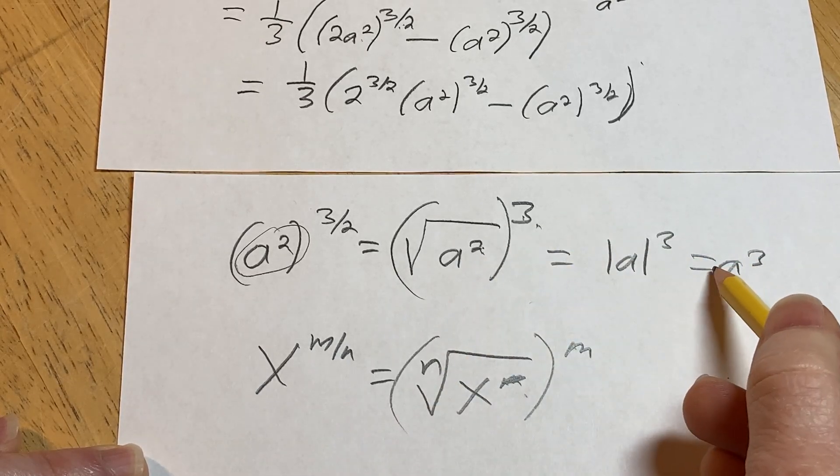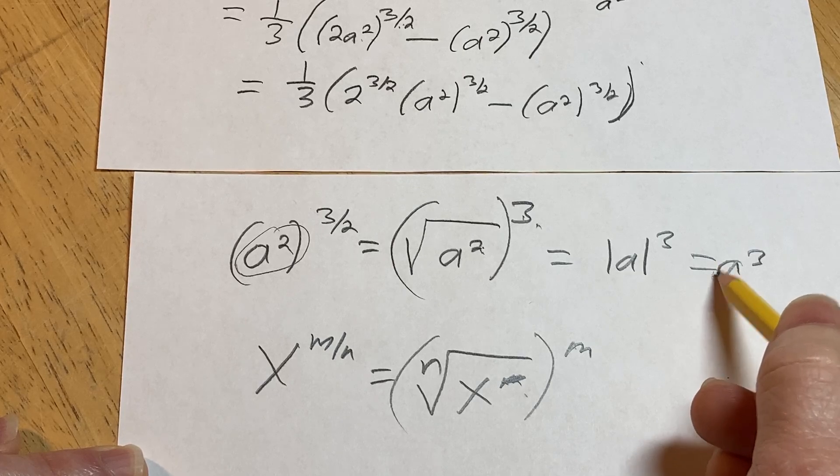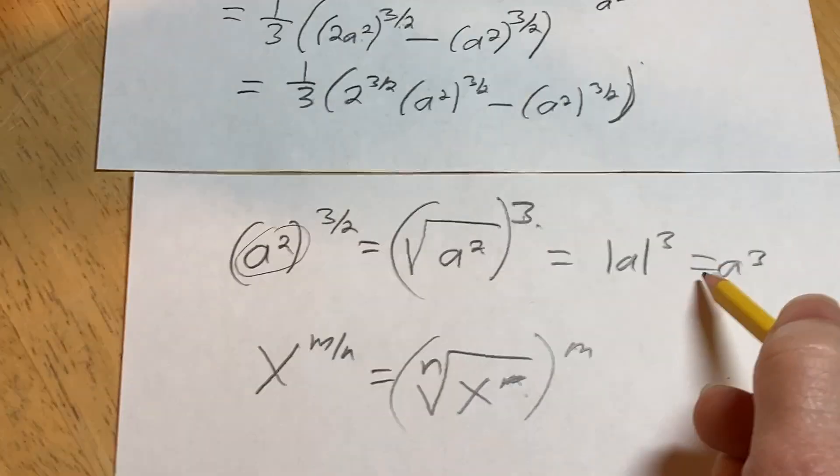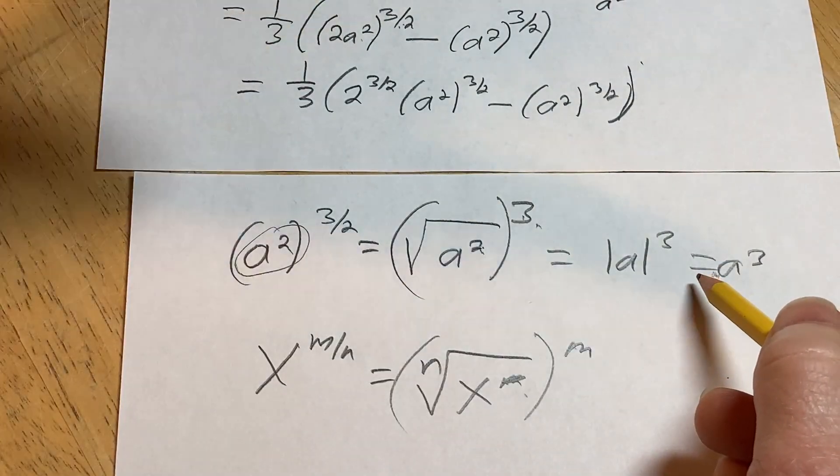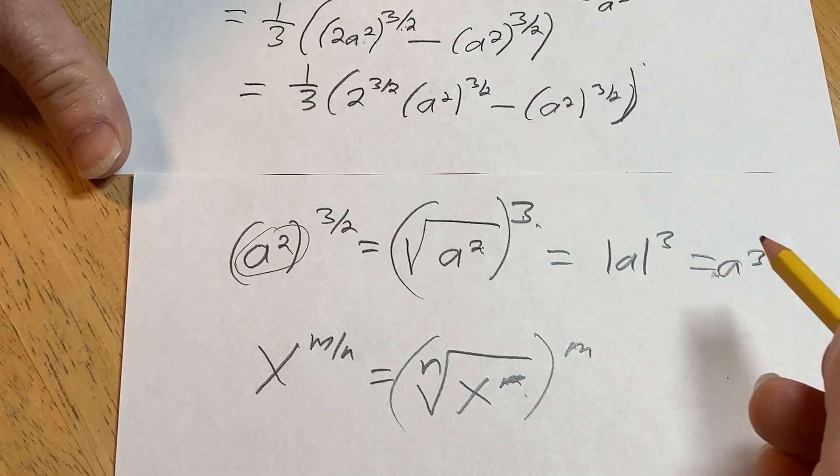If a was less than 0, there would be a negative here. Right? So that's sneaky. That's sneaky. But wherever I got this from, they didn't do that. They didn't make a negative.